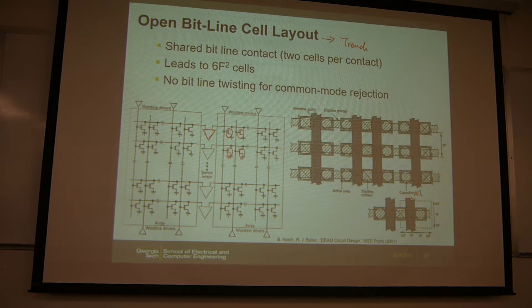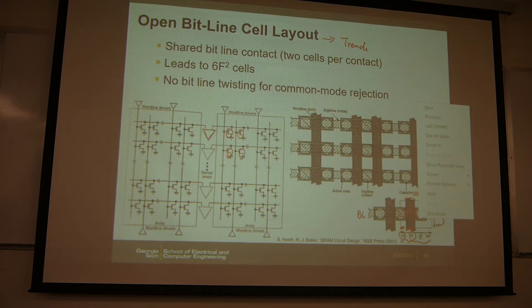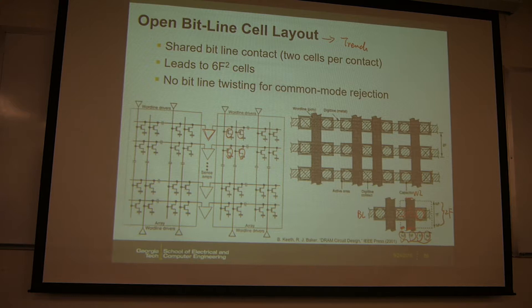This is the wordline, this is the bitline, this is the transistor, this is the capacitor, and this is the bitline contact. In this case you can achieve 6F squared: this side is 2F for the bitline and bitline spacing. In the other dimension: half F for the shared contact, 1F for the transistor gate length, 1F for the capacitor diameter, and half F for isolation to the adjacent cell — totaling 3F. So 3F times 2F equals 6F squared.